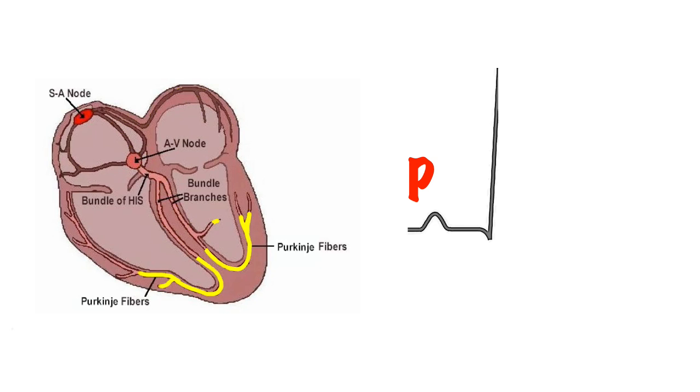When the AV node releases the impulse, it depolarises quickly down the left and right bundles to the Purkinje fibres causing the ventricles to contract in an orderly fashion. The bundles in the ventricles are designed to allow quick travel of the impulse rather like a motorway should allow fast flow of traffic. This impulse causes the much larger QRS complexes of an ECG.